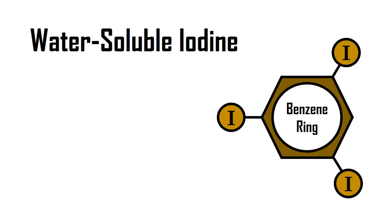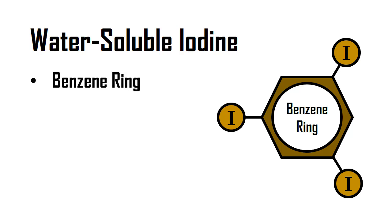There are a few types of contrast that we use in CT. The first kind we'll talk about is water-soluble iodine. Iodine is usually very toxic to the human body, so for CT imaging, it's attached to a benzene ring. A benzene ring is an organic molecule that is not so easily rejected by the body — it's not as toxic.